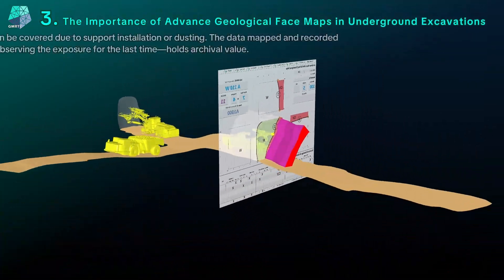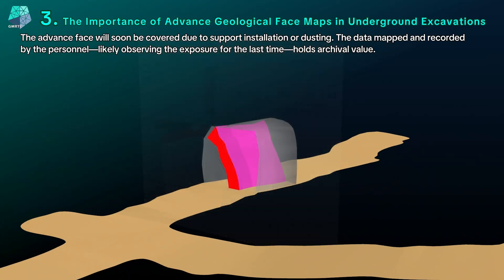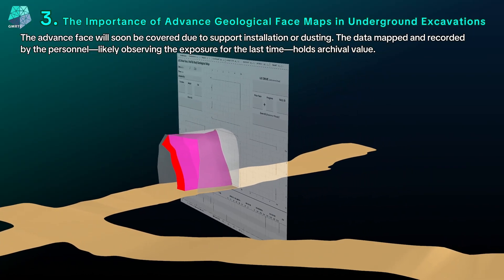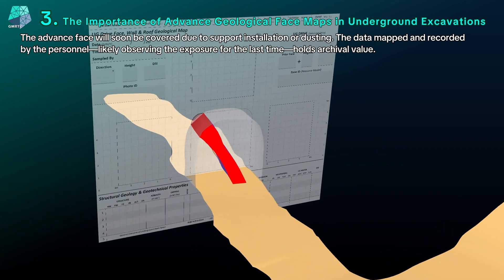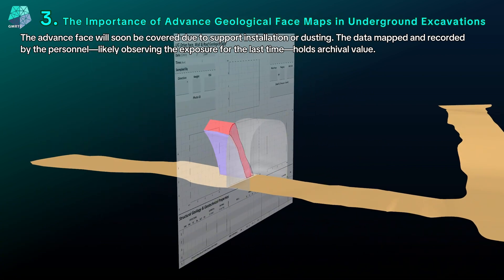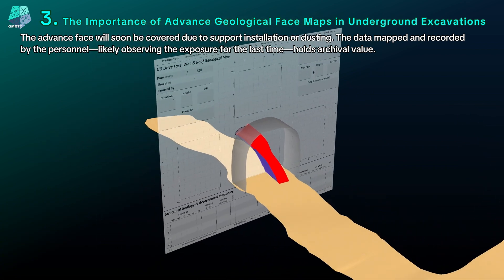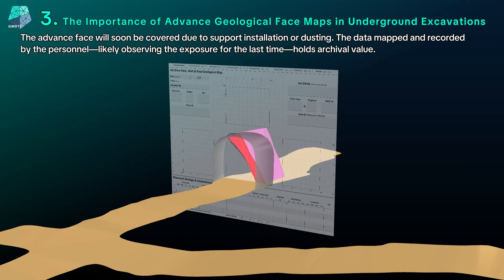Now, the importance of underground advance mapping and a systematic archive. The advance face will soon be covered due to support installation or dusting. The data mapped and recorded by the personnel, likely observing the exposure for the last time, holds archival value.